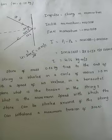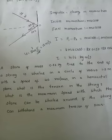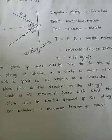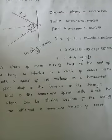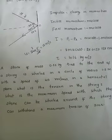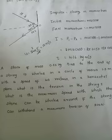The next problem is very important. A stone of mass 0.25 kg is tied to the end of a string and is whirled in a circle of radius 1.5 meters at 40 revolutions per minute in a horizontal plane. What is the tension in the string? What is the maximum speed with which the stone can be whirled if the string can withstand a maximum tension of 200 newtons?